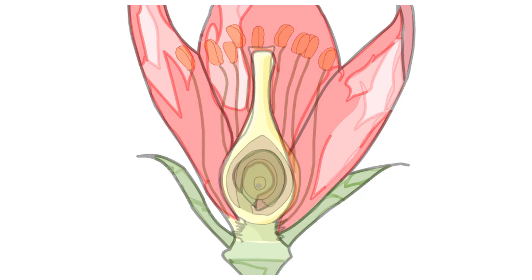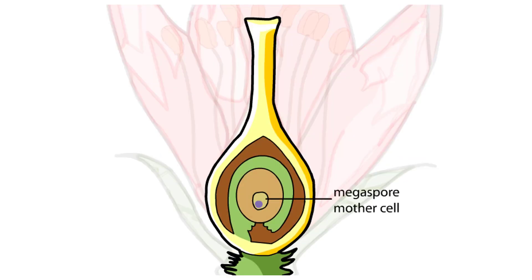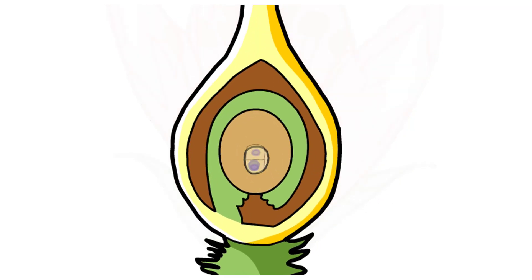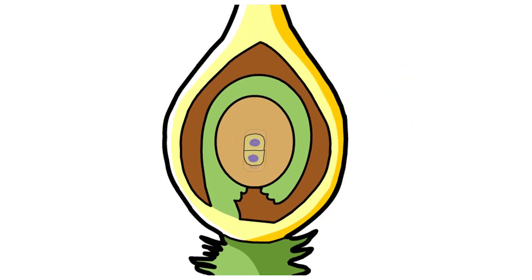The ovule contains a reproductive cell called the megaspore mother cell or megasporocyte. This diploid cell undergoes meiosis to produce four haploid megaspores. In most species, three degenerate, leaving one surviving megaspore.